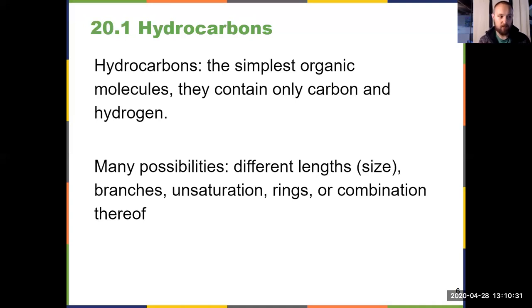They can vary in their degree of unsaturation which has to do with double bonds, triple bonds, or rings, or any combination thereof. Something could be branched and have a double bond or a triple bond, could be long, could be short. So there are a bunch of different classifications of hydrocarbons.